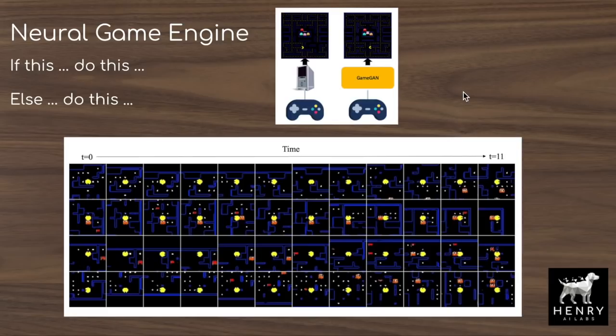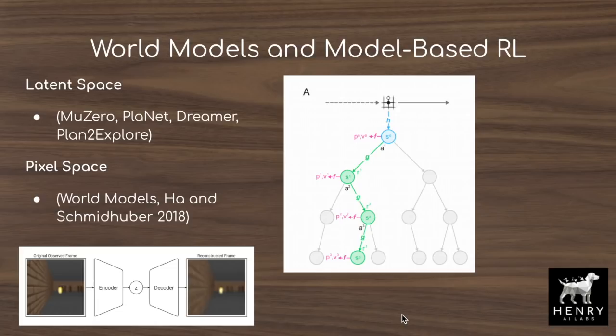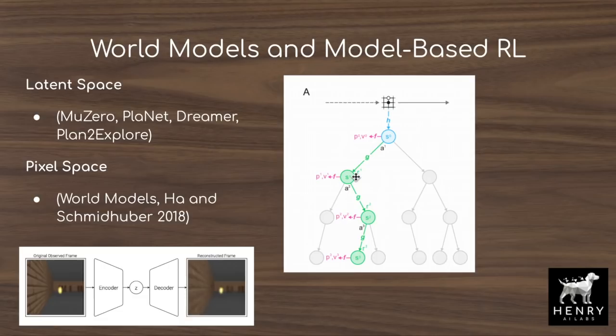It's also interesting because the programmer doesn't have to write different versions of the game for different operating systems, since you can just run it in this neural network. In addition to playing games, world models are useful for model-based reinforcement learning, where learning state-action-next-state transitions is really useful for sample efficiency. A lot of these techniques plan in a latent space — like MuZero, PlaNet, Dreamer, or Plan to Explore — going from an 84 by 84 by 3 RGB image into something like a 100-dimensional vector and planning in that compressed vector space rather than pixel space. GameGAN, by contrast, constructs the pixel space.